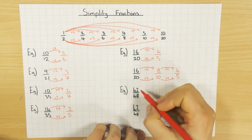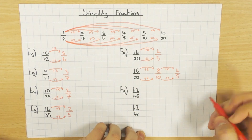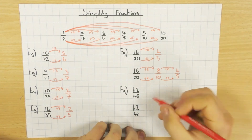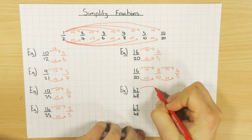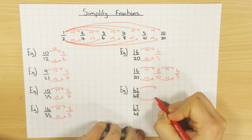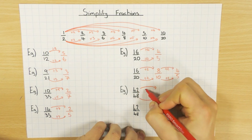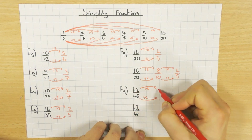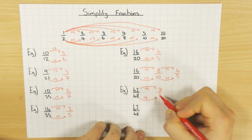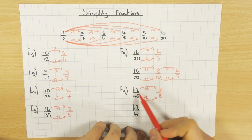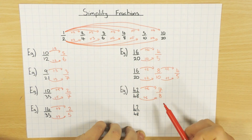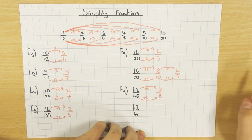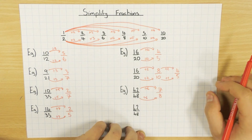If I look at this one here: 42 and 48. Times tables — I know that the highest common factor, the highest number that goes into both of these, is 6. So if I divide by 6, both top and bottom: 42 divided by 6 is 7, and 48 divided by 6 is 8. Because I used the highest common factor, it's just one step. Nothing goes into 7 and 8, so I can leave it there.